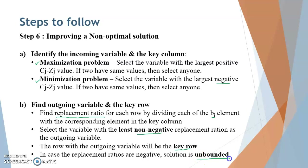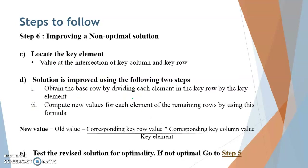Pay particular attention to this: if all replacement ratios are negative, the solution is unbounded and we cannot find an optimal solution. There must be at least one positive replacement ratio to select the outgoing variable. This condition for finding the outgoing variable and key row is the same for both maximization and minimization. The third sub-step is to locate the key element, found at the intersection of the key column and the key row.